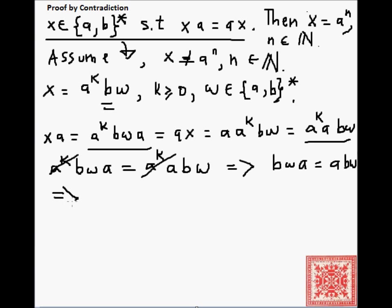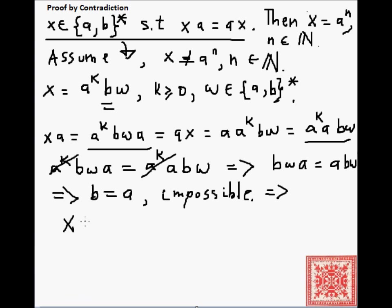Well, this implies that b is equal to a, which is impossible. So we have derived the contradiction, and hence x is equal to a to the n for some natural number n.